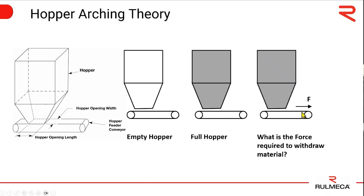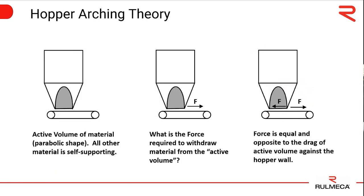If you consider the conveyor belt moving this way, that makes this edge of the hopper almost like a snowplow pushing snow that way. How do we calculate it? We care about the size and shape of the active volume of material, because that is all that will be felt by the conveyor belt. This is called hopper arching theory.